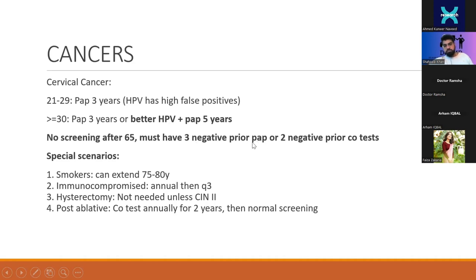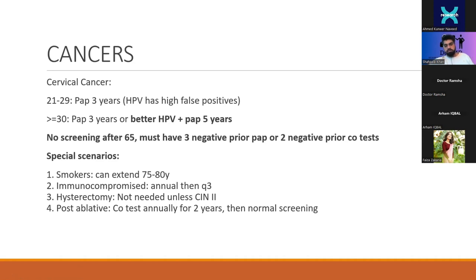Special scenarios for cervical cancer screening: they will give prior negative Pap test to indicate stopping at 65. Smokers can be extended to age 75–80, though not high yield. Immunocompromised individuals need annual screening rather than the routine interval, eventually moving to three-year testing. A hysterectomy means screening is not needed unless there was prior high-grade dysplasia (CIN2). Post-ablative treatment for cervical intraepithelial neoplasia requires annual testing for two years before returning to normal intervals.